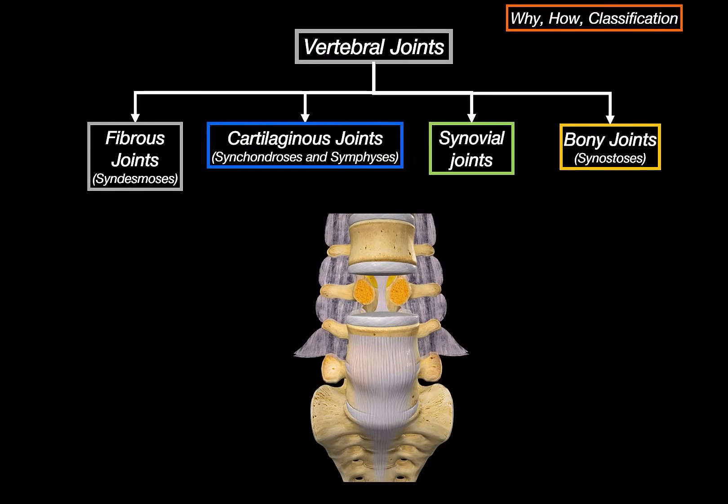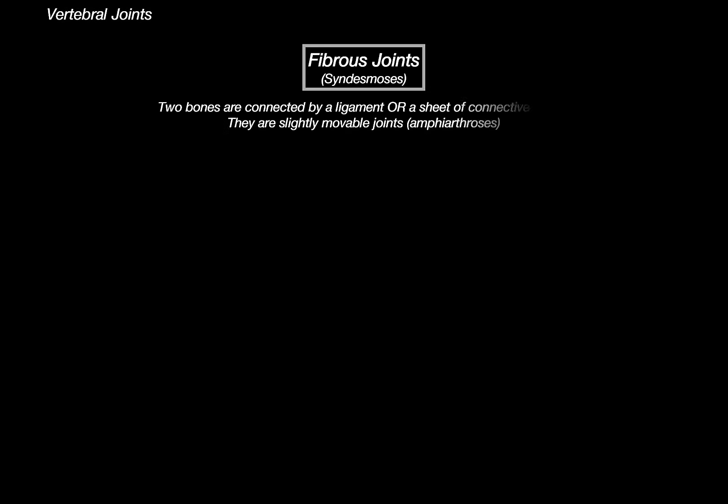Each of these contributes in its own way to the overall function and stability of the spine, and all joints fall under these categories. Fibrous joints in the spine are classified as syndesmosis, meaning two bones are connected by ligaments or a sheet of connective tissue without a true joint cavity. They are slightly movable joints, providing stability — what we call amphiarthrosis.